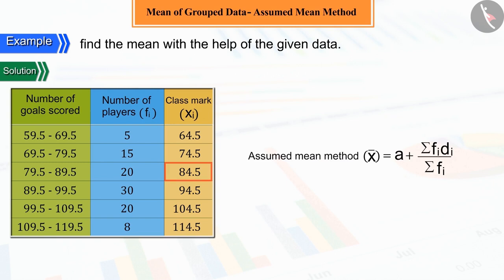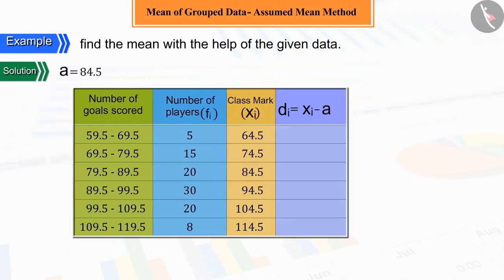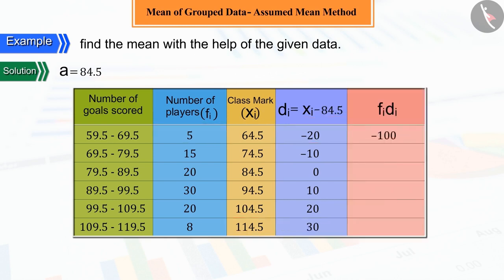Suppose here the assumed mean A is 84.5, in which difference between A and each xi is represented by di. And find the value of fi di.